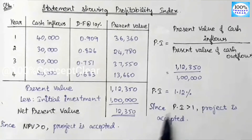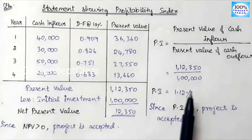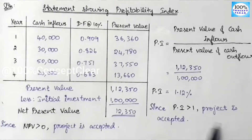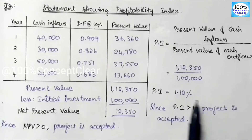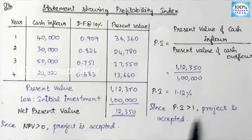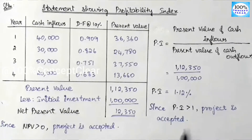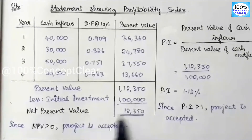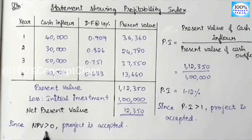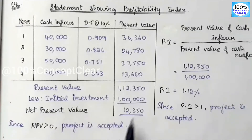Next, the decision criteria. When the Profitability Index is greater than 1, we accept the project. In this sum, PI = 1.12, which is greater than 1, so we can accept this project. Also note that the Net Present Value is 12,350, which is greater than 0, confirming the same decision.